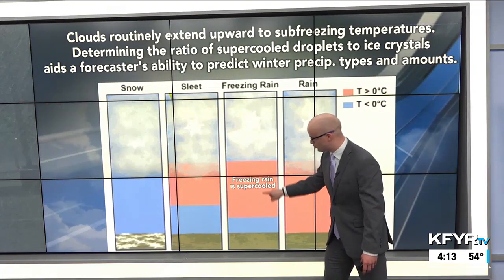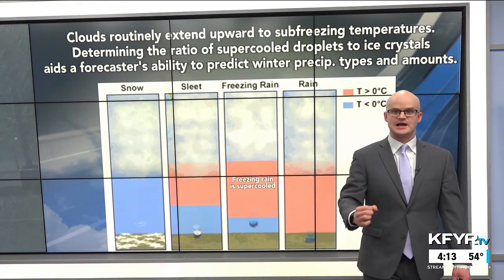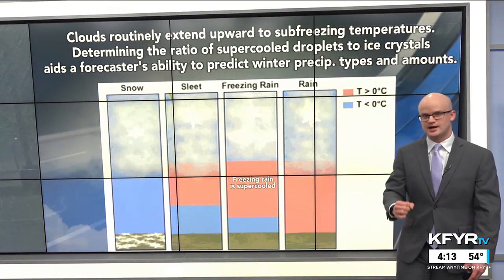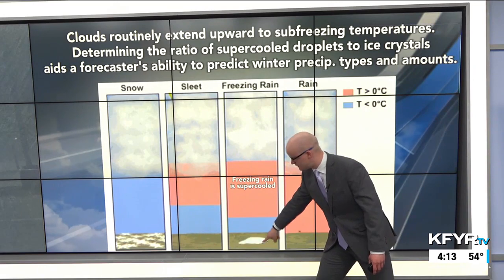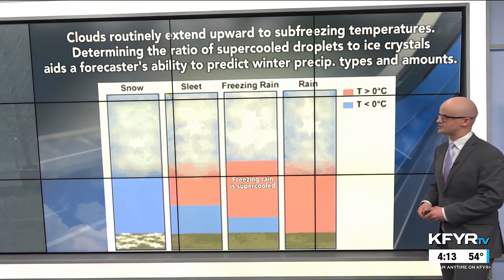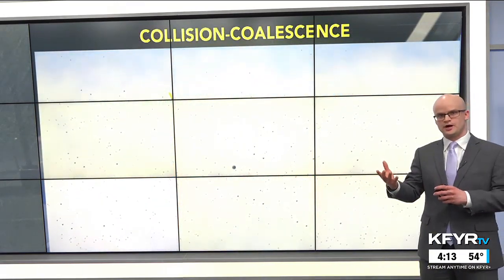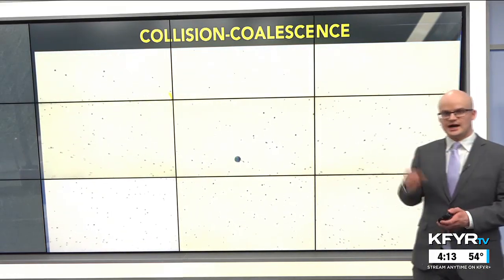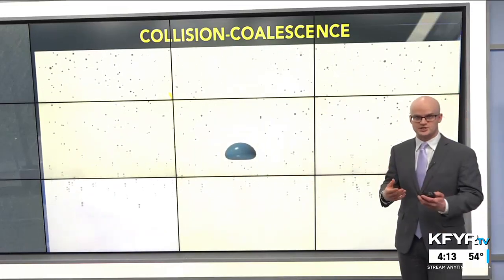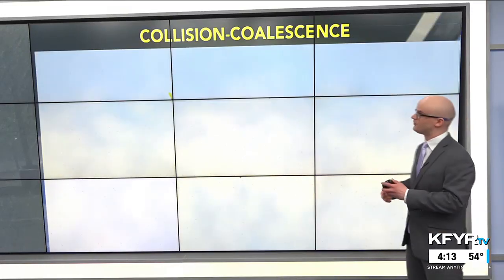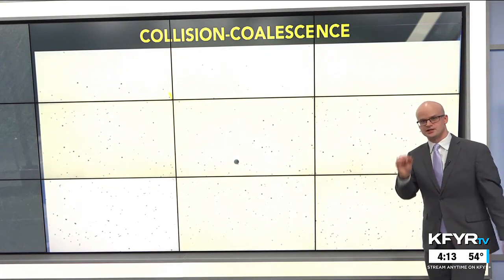Freezing rain is actually supercooled — that's why when it makes contact with any surface, it freezes right on contact. It's still in liquid form even though it can be below freezing for a bit before it makes contact with the surface. Determining the ratio of those supercooled water droplets and ice crystals is really important for us when forecasting precipitation types and snowfall amounts.